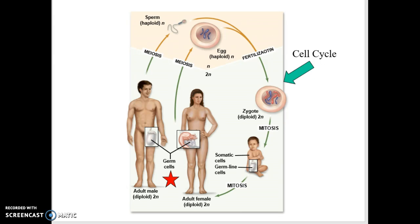So the somatic cells are the cells that will turn into hair, skin, bone, blood, etc. They will continuously go through the cell cycle and mitosis until the day we die.